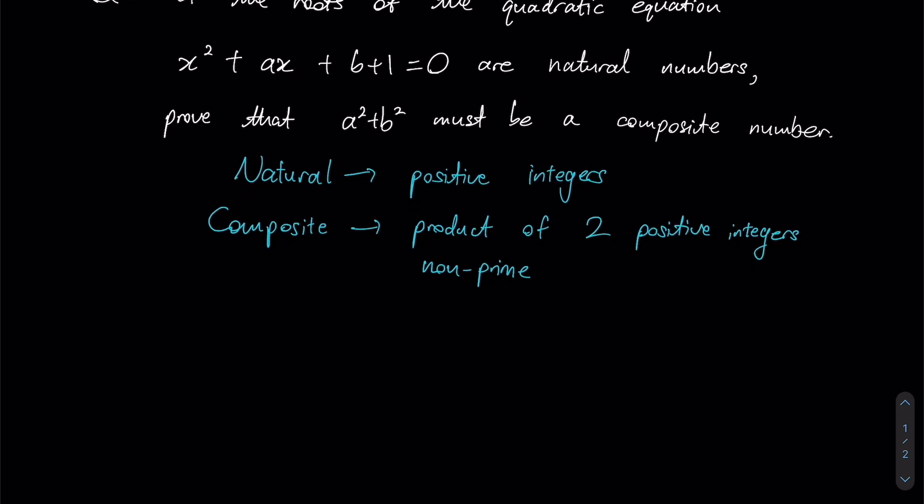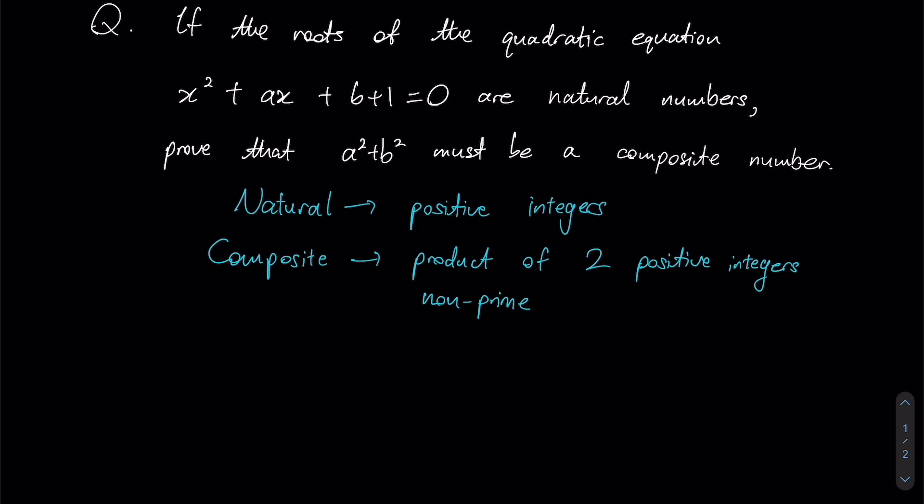Let us now tackle this question. Applying Vieta's theorem to this question, if we let alpha and beta be the two roots of this particular quadratic equation, then the sum of my roots alpha plus beta would be negative a over 1, which is just negative a. In turn, my product of roots alpha times beta would be c over a, which is b plus 1 over 1, which is just going to be b plus 1.